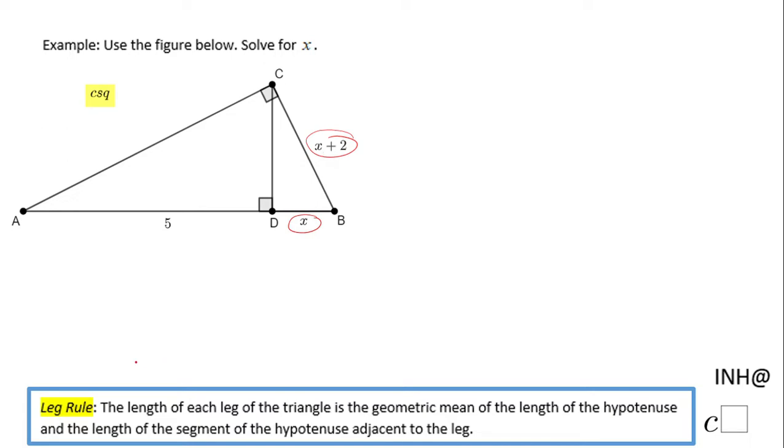You notice also I have here something that is called the leg rule. This leg rule works because we have a right triangle, the original triangle, or the big triangle ABC. And in that triangle we have the altitude CD of that right triangle. That altitude gives us this leg rule.